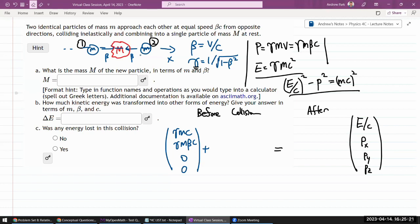So its X component of momentum will be gamma M beta C and then zeros for Y and Z components. And I have particle 2 that has energy gamma MC, and then momentum is going in the negative X direction, so minus gamma M beta C and then zeros for Y and Z.